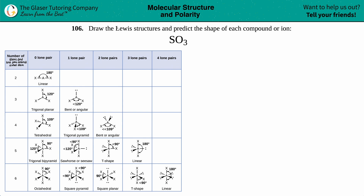Number 106: draw the Lewis structures and predict the shape of each compound or ion — we have SO3, sulfur trioxide. We need to draw this Lewis structure and then predict the shape. When they talk about shape, they're basically looking for the molecular geometry.